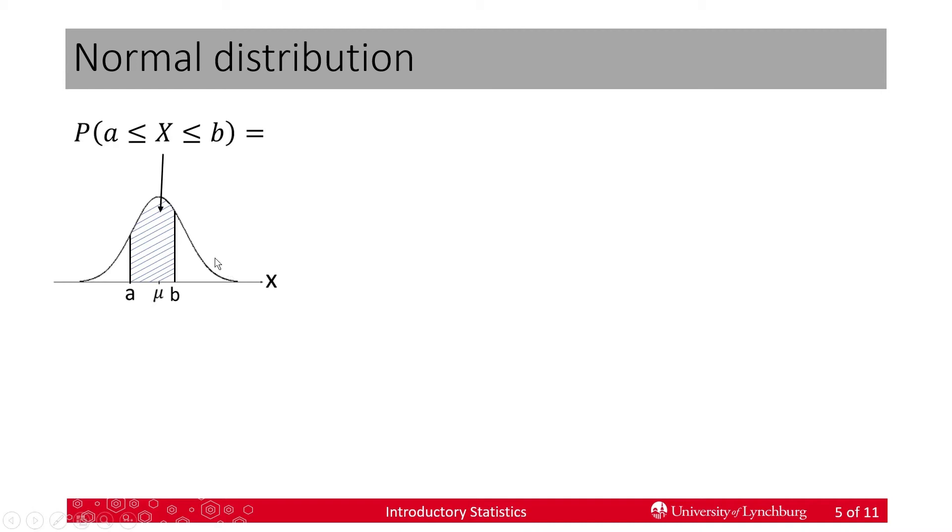For the normal distribution, as I mentioned, we have to have some area in order to have any probability, in order for the probability not to be zero. And we're working with x here and we have two values, a and b, and mu is in the center. Now, this is equivalent to, or the same thing as, the z values. So, if I take a z score for a and a z score for b, then the area between those two is the same area or same probability as the area between a and b under the x scale. So, we are simply transforming from x to z.